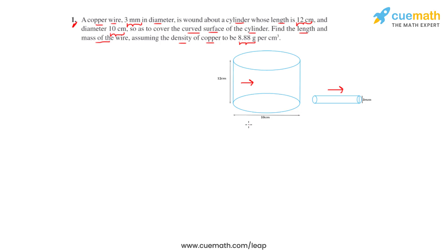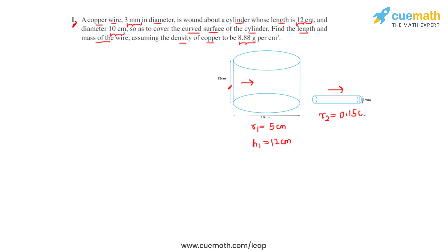The cylinder has a diameter of 10 centimeters, so we can calculate its radius to be equal to 10 centimeters divided by 2, giving us a radius r1 of 5 centimeters. Its height h1 is equal to 12 centimeters. Now we can calculate the radius of the wire: r2 will be equal to 3 millimeters divided by 2, which converting to centimeters is 0.3 centimeters divided by 2, giving us 0.15 centimeters.